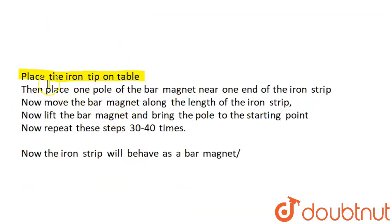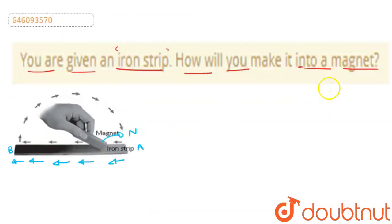Then, place one pole of the bar magnet near one end of the iron strip. Just like I have shown you in the diagram. Just like I have told you, North Pole at the iron strip starting point.